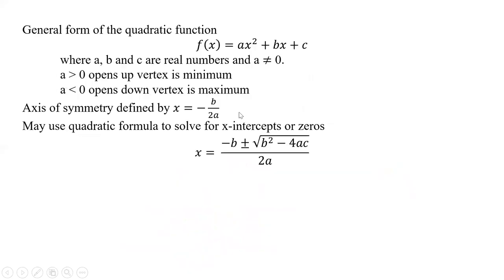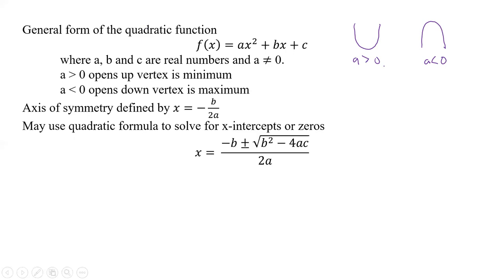So what is the general form of the quadratic function? It's f of x equals ax squared plus bx plus c. Now a, b, and c are all going to be real numbers, and a cannot be zero because if a was zero, we wouldn't have an x squared term, which means it's not going to be a quadratic. Now, a being greater than zero means it's going to open up, whereas a less than zero is going to look like that — we're going to have some maximum. So that would be a max, that would be a min, depending on your a.